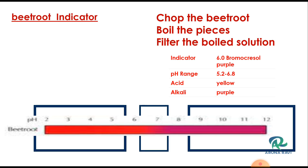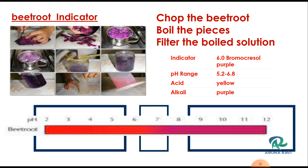Let's talk about beetroot. First of all, chop the beetroot into pieces and boil them. Afterwards, filter the boiled solution. The filtered solution will then become the natural acid-base indicator.